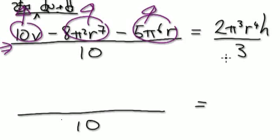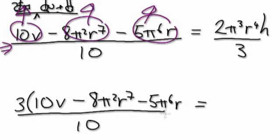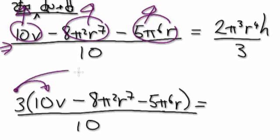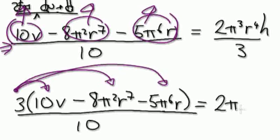So we are multiplying both sides by 3, so you've got to put all these in brackets: 10v minus 8 pi squared r to the 7, minus 5 pi 6 r — close the brackets. On the right-hand side, it would be 2 pi to the power of 3, r to the power of 4, h.